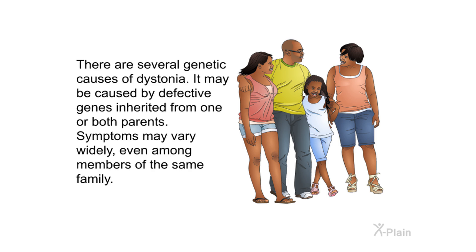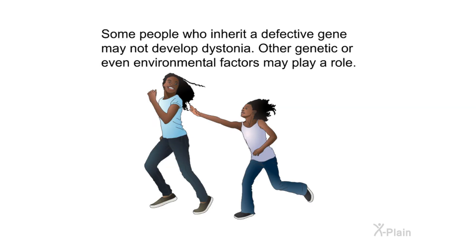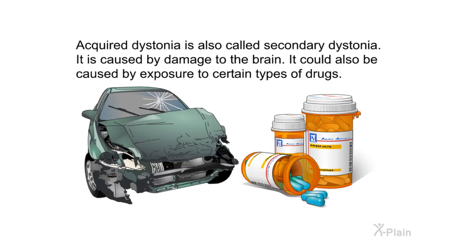There are several genetic causes of dystonia. It may be caused by defective genes inherited from one or both parents, and symptoms may vary widely even among members of the same family. Some people who inherit a defective gene may not develop dystonia, as other genetic or environmental factors may also play a role.